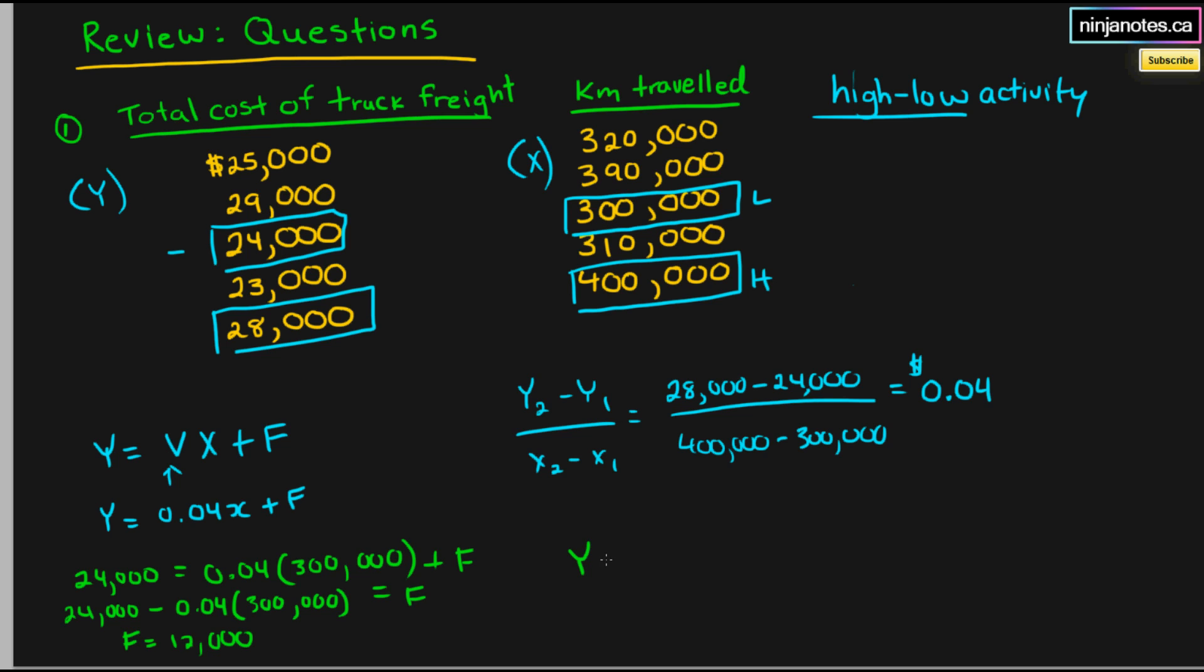And like we have it, now we have our cost function, which is y is equal to 0.04x plus 12,000.